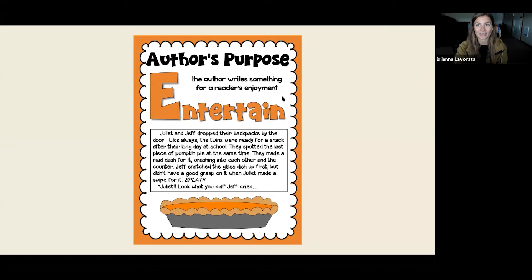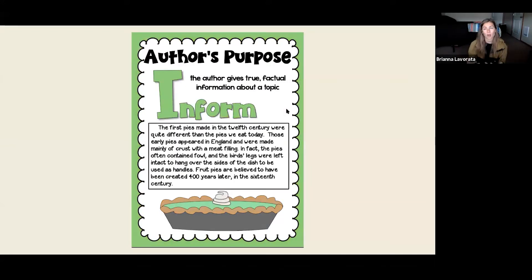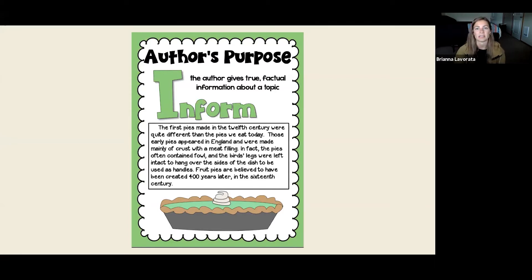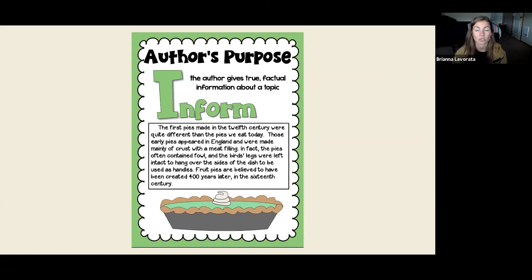We just have a little passage, but it sounds like an exciting story — maybe we can continue reading it another time. Now we have our last type of author's purpose: inform. This is when the author gives true, factual information about a topic. I'm going to model reading an informational passage: 'The first pies made in the 12th century were quite different than the pies we eat today. Those early pies appeared in England and were made mainly of crust with a meat filling. In fact, the pies often contained fowl, and the bird's legs were left intact to hang over the sides of the dish to be used as handles.' That is so interesting and sounds so crazy!